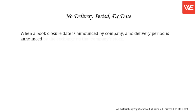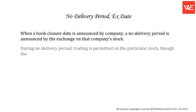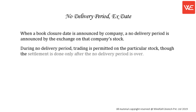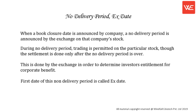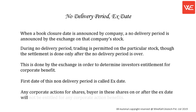No Delivery Period, X Date. When a book closure date is announced by a company, a no delivery period is announced by the exchange on that company's stock. During the no delivery period, trading is permitted on the particular stock, though the settlement is done only after the no delivery period is over. This is done by the exchange to determine investors' entitlement for corporate benefits. The first date of this non-delivery period is called the X Date. Any buyer of shares on or after the X Date will not be entitled to any corporate action benefits.